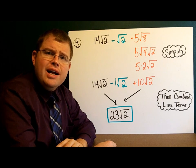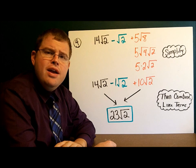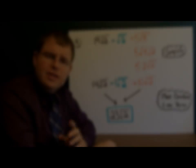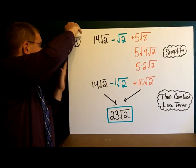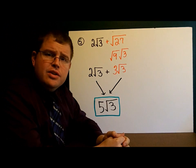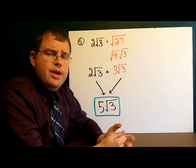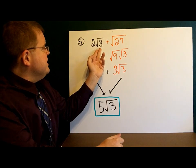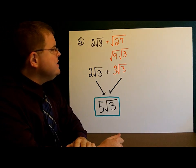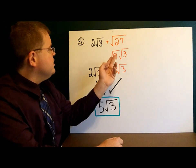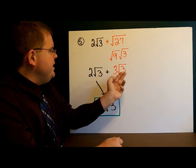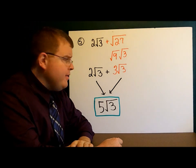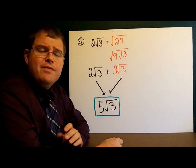I'd like for you to try a couple more examples. Please pause the video here and try the next example, then we'll see how you did. Let's take a look at the solution. Example 5: we have 2 square roots of 3 plus the square root of 27. There are no like terms, but let's see if either of those square roots simplify. 3 does not, but 27 does — to 9 and 3. The square root of 9 is 3, and the square root of 3 stays the same. I now have 2 square roots of 3 plus 3 square roots of 3, which gives me a total of 5 square roots of 3.